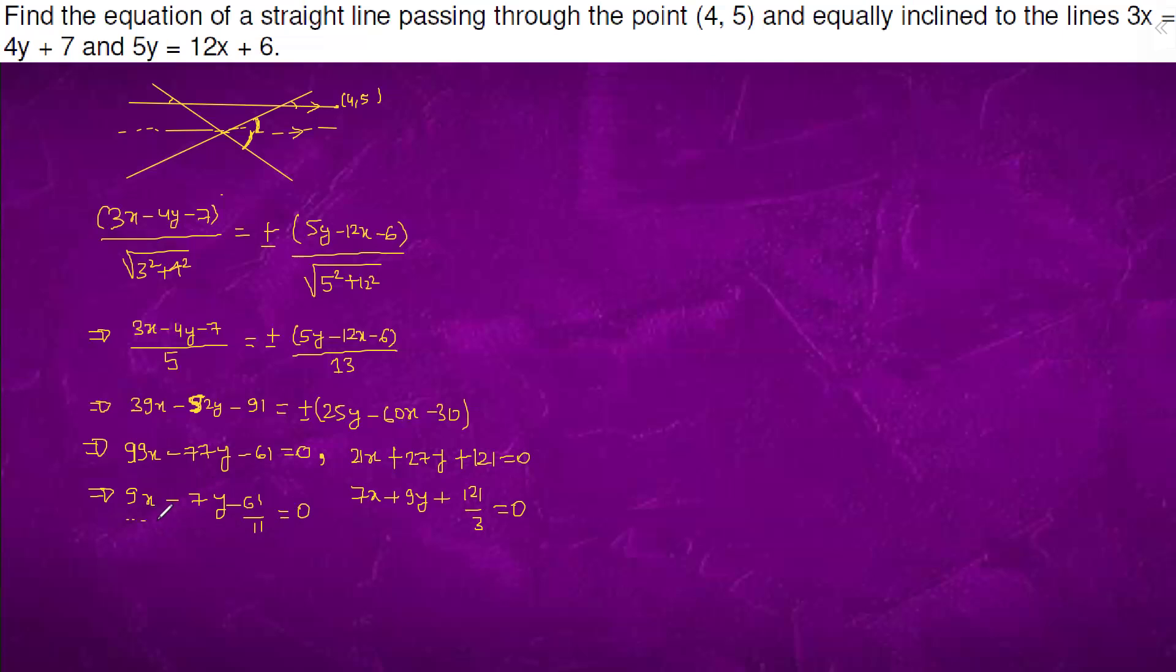Now can we say that line parallel to this could be written as 9x minus 7y equals to c passing through 4 comma 5. So what is the value of c? The value of c is 36 minus 35, which is 1.